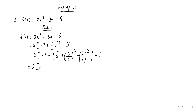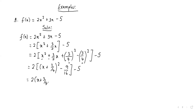Then we have 2 times the quantity x plus 3 over 4 squared, and we're left with minus 9 over 16. Then come back and do the expansion: 2 multiplied by the bracket gives 2 times x plus 3 over 4 squared. Then we multiply 2 by 9 over 16 — that's 9 over 8 — and minus 5. Putting those together: negative 40 minus 9 is... so we get 2 times x plus 3 over 4 squared minus 49 over 8. The square is complete.